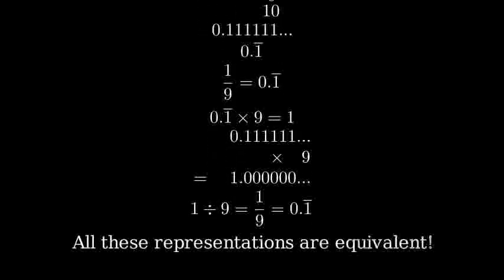So 1 divided by 9 can be written as either the fraction 1 ninth or as 0.1 repeating. Both representations are equivalent and give us the same value.